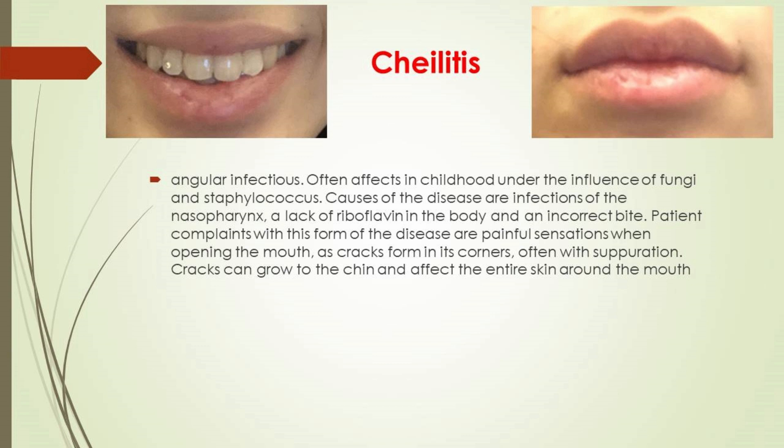Actinic cheilitis is expressed by the formation of a red border on the lips with prolonged exposure to sunlight and can be of two forms: exudative (characterized by hyperemia, edema, cracks, erosions, and ulcer vesicles) and dry (characterized by a bright red border with white scales). Even after treatment, relapse in spring and summer is possible.